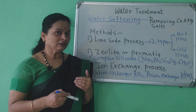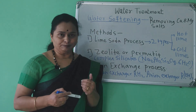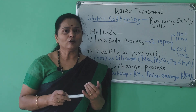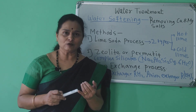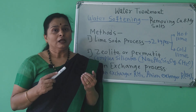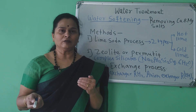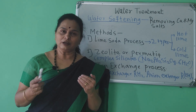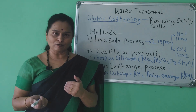Water softening method — water softening means removal of calcium and magnesium salts which cause hardness of water. These salts are converted into insoluble salts and then filtration is used. This method is the water softening method.